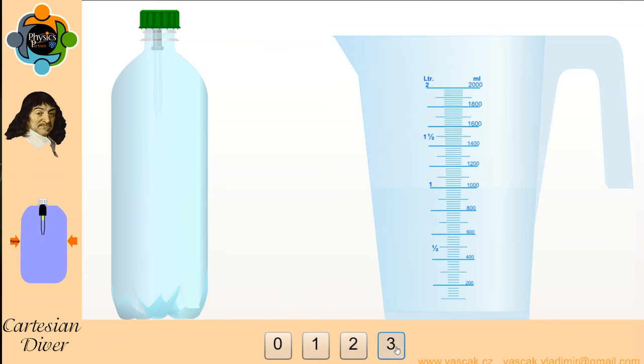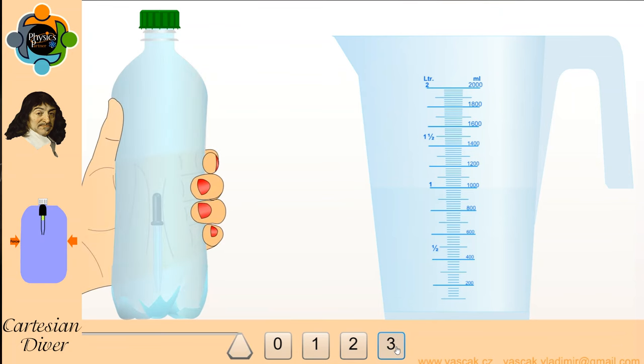This increase in density allows the eyedropper to sink. Conversely, when I release the pressure, the air inside the eyedropper expands, causing it to become less dense than the water. This decrease in density allows the eyedropper to float back to the surface.